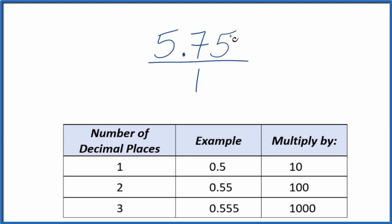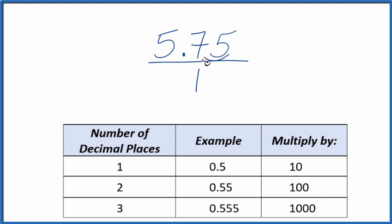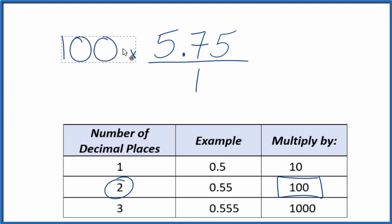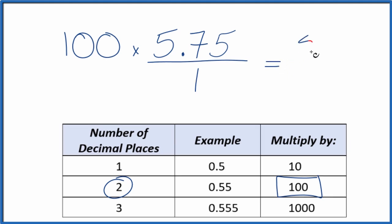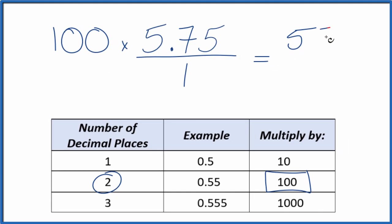What we need to do is get this numerator here to be a whole number. And since we have two numbers after the decimal place, we're going to multiply that by 100, and that'll give us our whole number. So we multiply 100 times 5.75, and we end up with 575. So now we have a whole number.